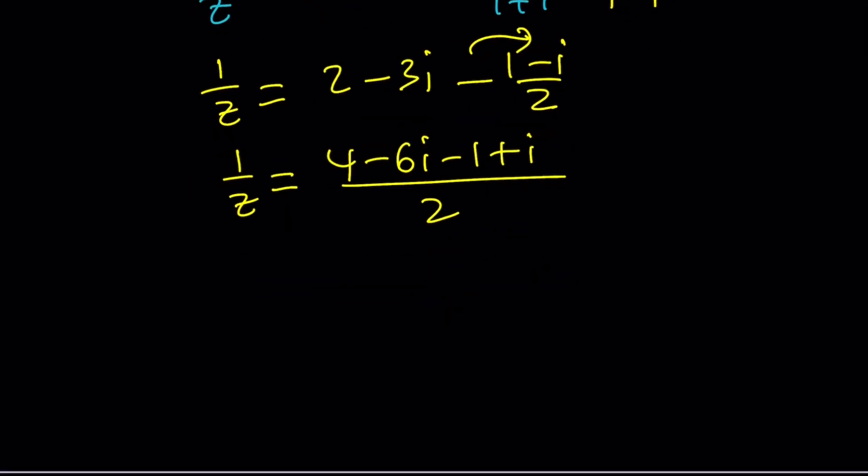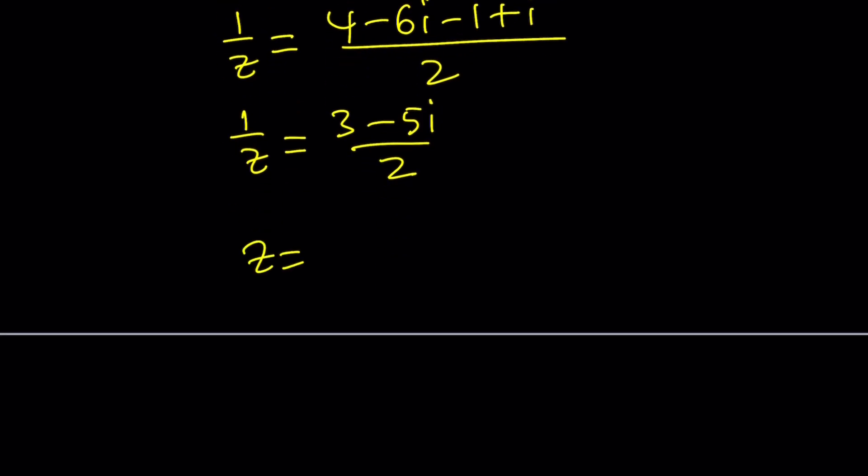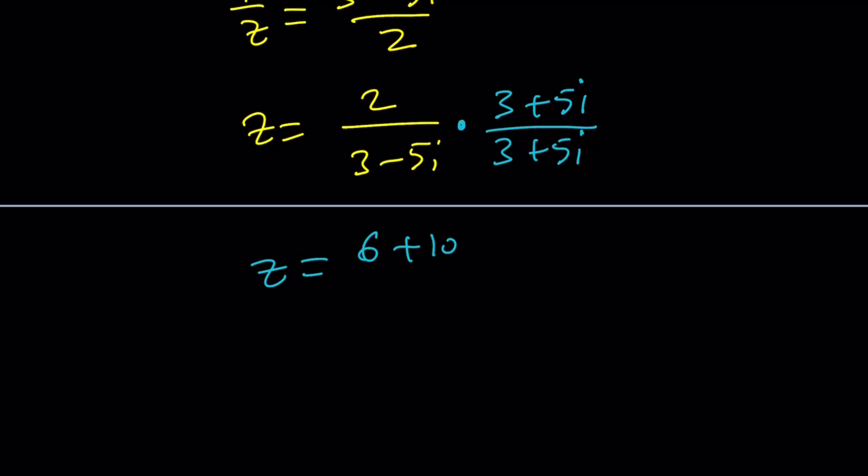We can write 1 over Z as 3 minus 5I over 2. Now Z is going to be the reciprocal of this, so Z is 2 over 3 minus 5I. Now we can multiply by the conjugate, which is 3 plus 5I top and bottom. When you distribute the 2 you're going to get 6 plus 10I divided by, well, 9 plus 25, is that familiar? 34. If you divide the top and bottom by 2 you're going to get 3 plus 5I over 17, or 3 over 17 plus 5 over 17 I.